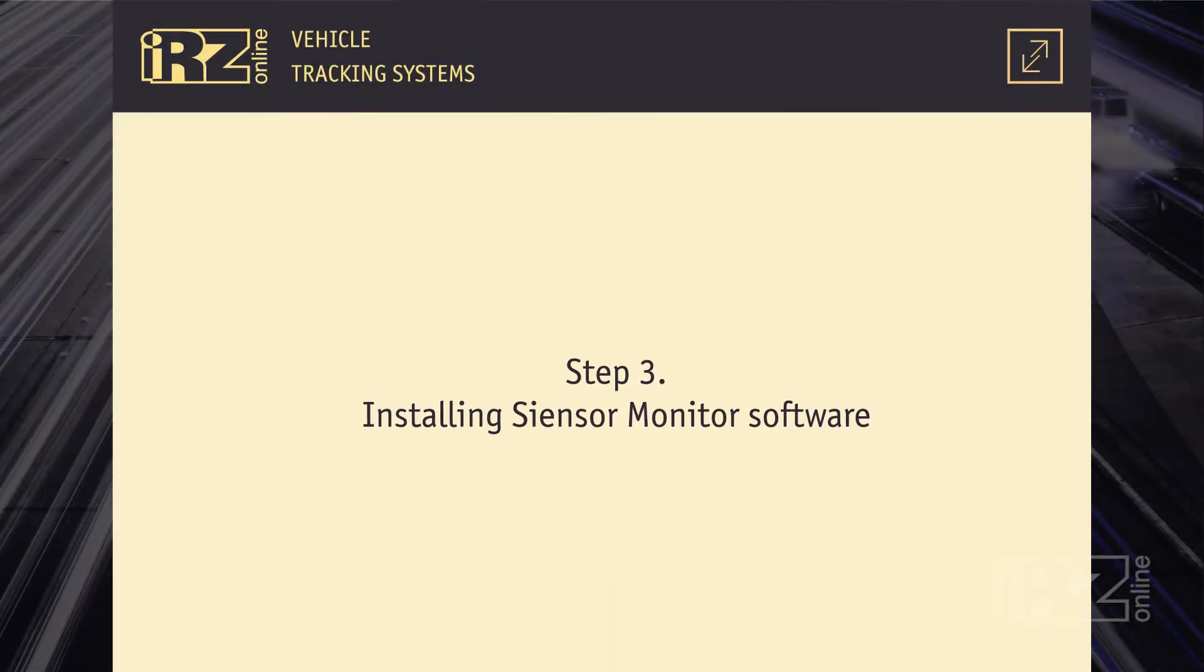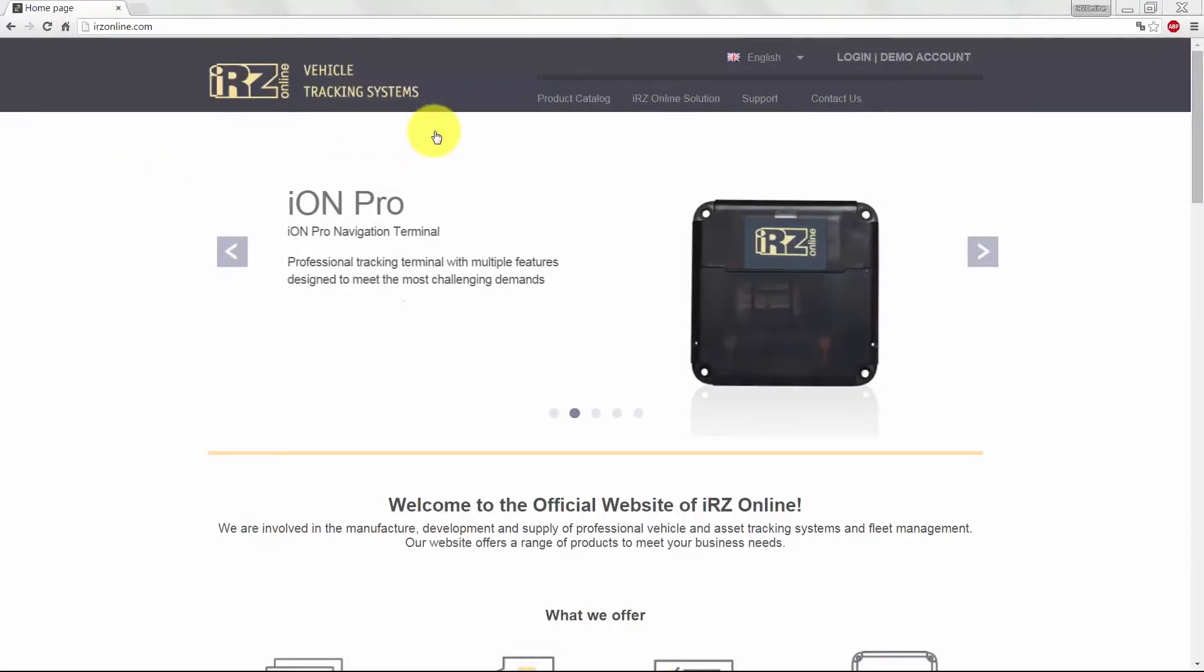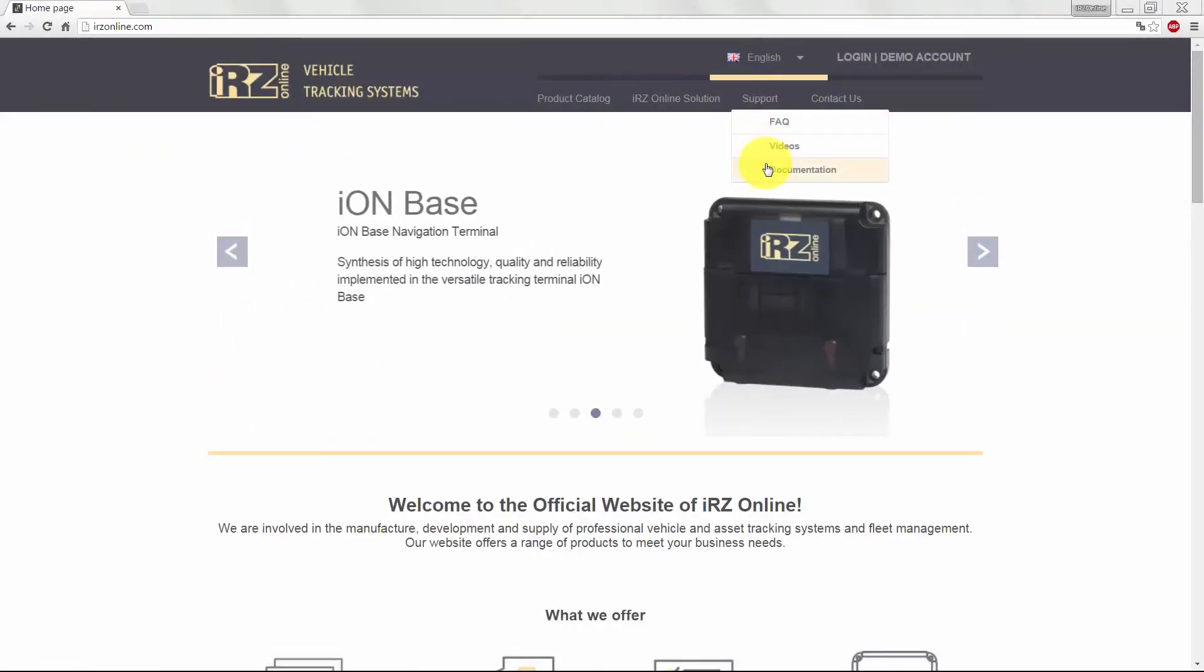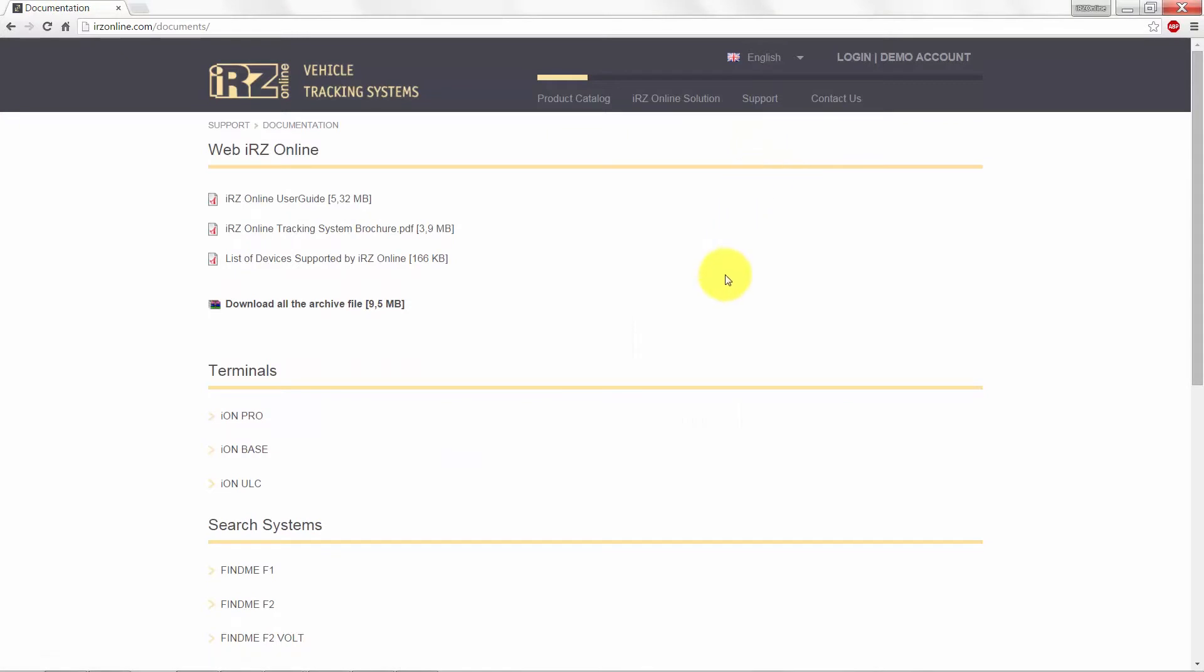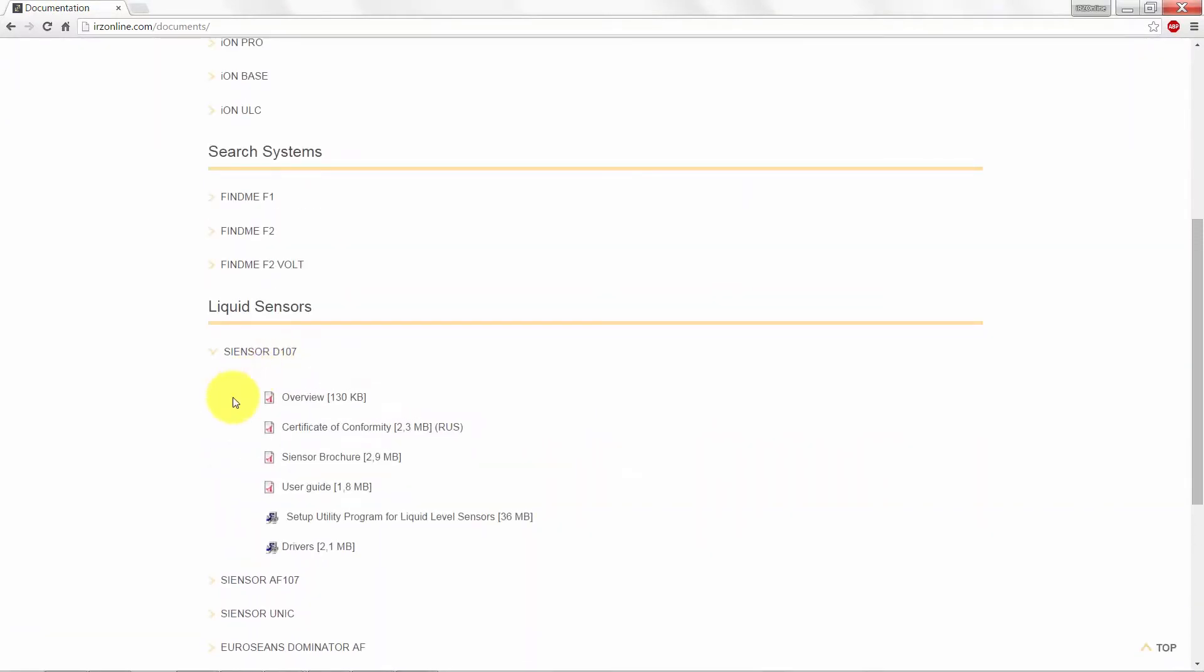You need the program Censor Monitor for adjustment of the sensor. This program is available for download in the documentation section, Block Censor D107. The program for setting liquid sensors, for the digital sensor and analog sensor, the program is different.